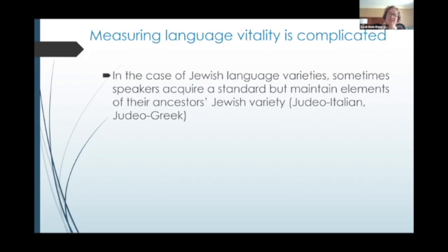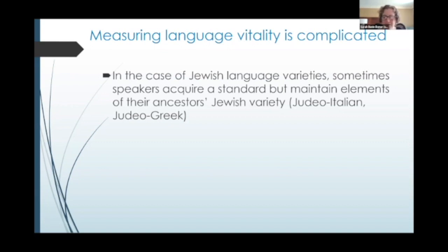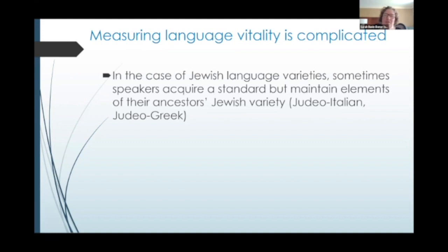Another issue, and I think this really applies in the case of Jewish languages, is that sometimes the speakers of the endangered language acquire a standard language but maintain elements of their ancestors' Jewish variety. You see this especially with Judeo-Italian and Judeo-Greek. The speakers of Judeo-Italian eventually picked up the standard language, as many people in Italy did based on language policies there, but they still maintain some elements of their ancestral Judeo-Italian. Are they considered speakers of the language when you're counting? Same with Judeo-Greek, where they picked up standard Greek and used some elements of Judeo-Greek — distinctive features like Hebrew words used with distinctive Greek pronunciations.